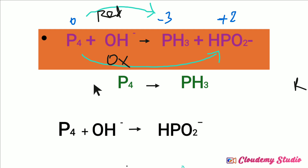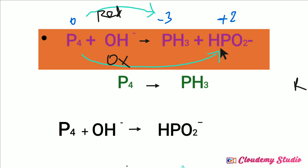The gain of electrons needs to be mentioned on the left-hand side of the equation. The next change: phosphorus oxidation number changes from zero to plus two. This change is the oxidation half-reaction.